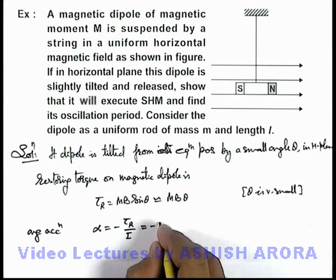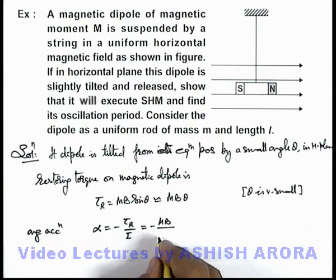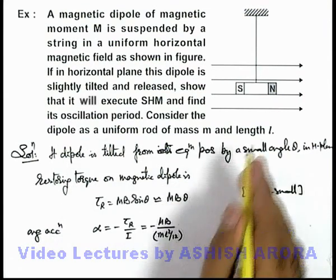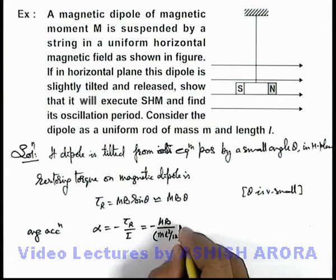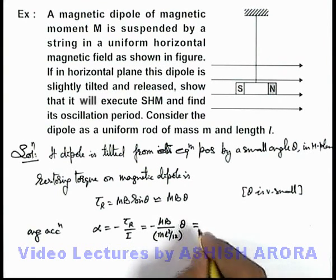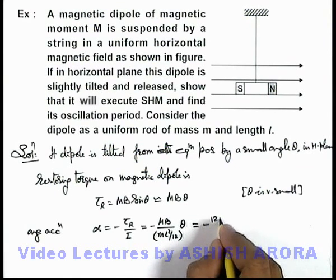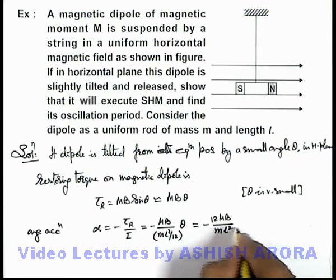Substituting the values, this will be α = -MB/I × θ. The moment of inertia of this bar is I = ml²/12 for a uniform rod of mass m and length l. This gives α = -12MB/(ml²) × θ.